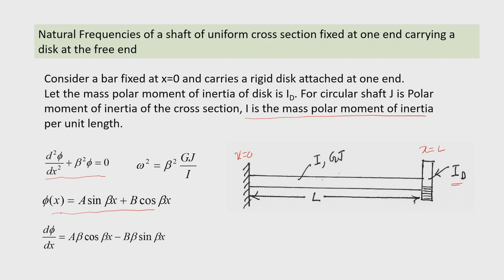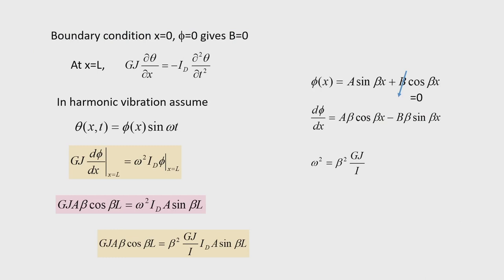The solution for the mode shape is φ(x) = A·sin(βx) + B·cos(βx), with dφ/dx = Aβ·cos(βx) − Bβ·sin(βx). At x = 0: φ(0) = 0 gives B = 0. At x = l where the disc is attached, the torque at the free end is not zero but equals the inertia torque of the disc: GJ·(∂θ/∂x)|_{x=l} = −I_D·(∂²θ/∂t²)|_{x=l}.